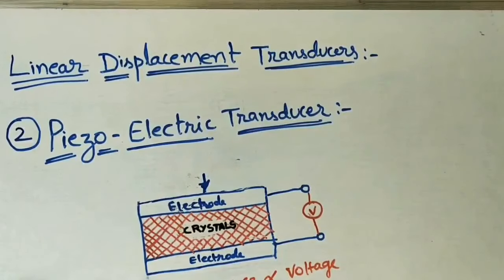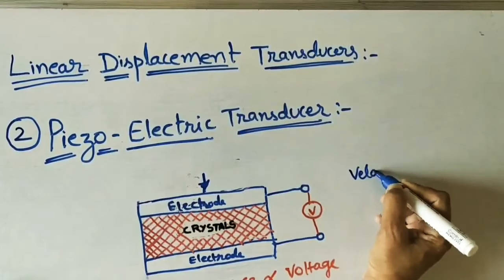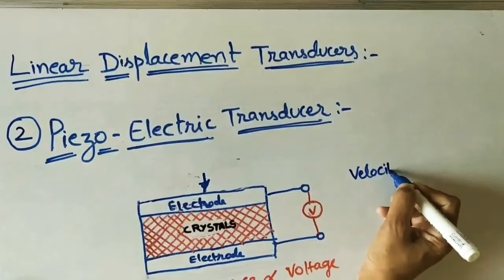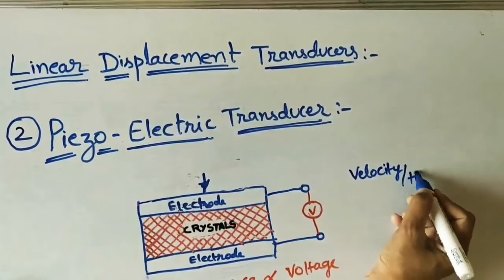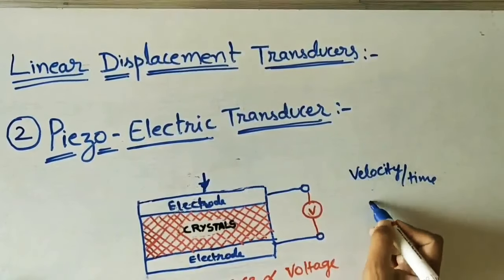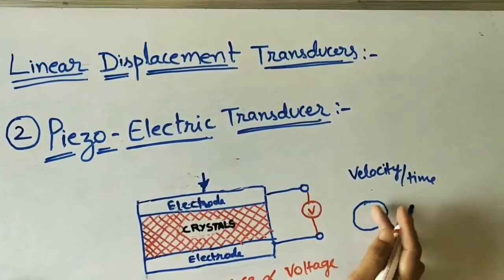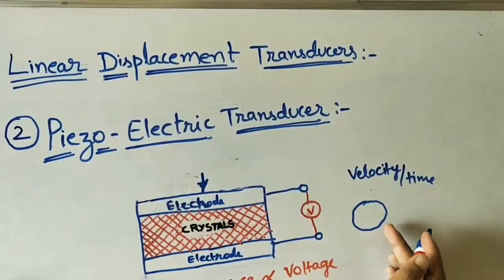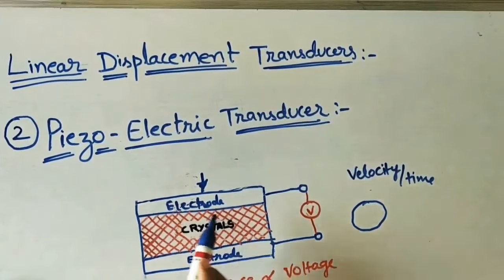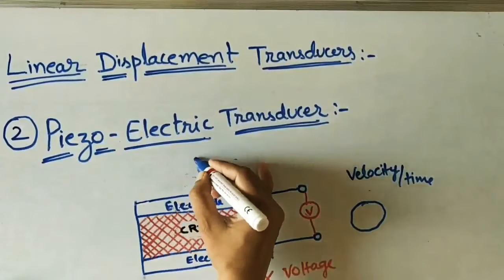Piezoelectric transducers are used in automobile vehicles as accelerometers. An accelerometer measures how much velocity a vehicle is moving per unit time — that is acceleration. We can fix this small instrument in vehicles to find their acceleration. They are also used in pressure cells, which measure pressure — that is force per unit area.